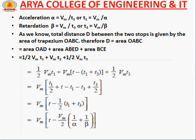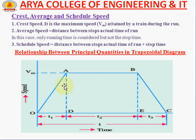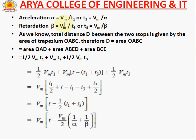For calculations: acceleration alpha equals maximum speed VM divided by time T1, so alpha = VM / T1, or T1 = VM / alpha. Retardation beta equals VM divided by T3, so beta = VM / T3, or T3 = VM / beta. Retardation means braking.